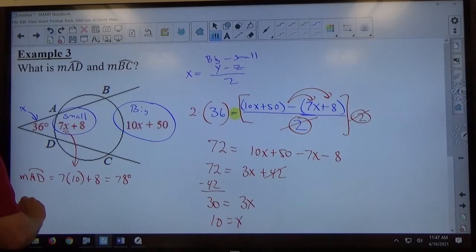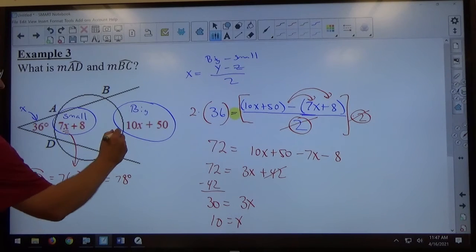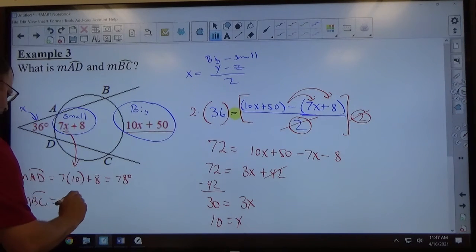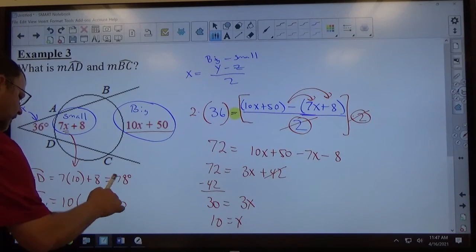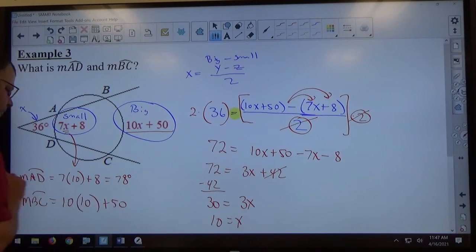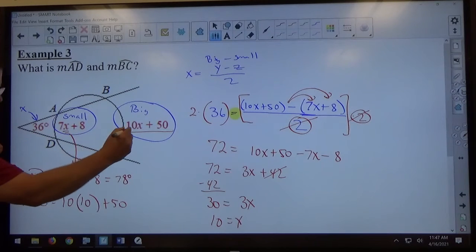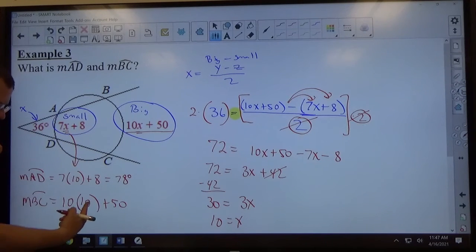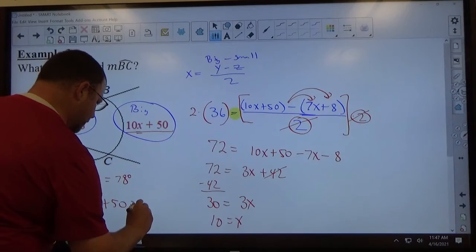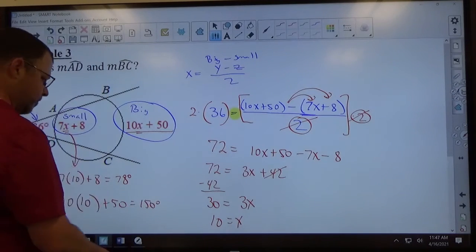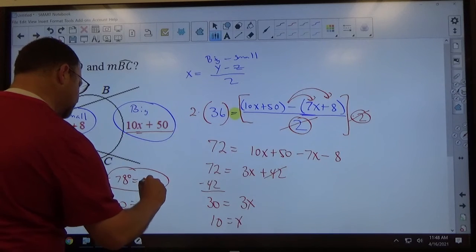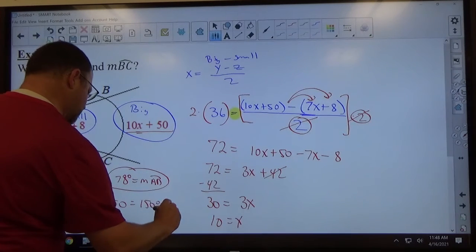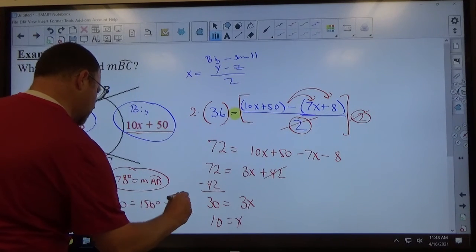Measure of BC equals 10x plus 50. 10x plus 50. Instead of x, I'm going to write down 10. 10 times 10 is 100 plus 50 is 150. So AD is equal to 78 and BC is equal to 150.